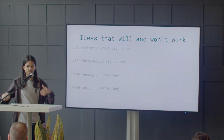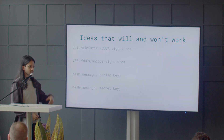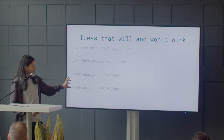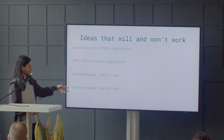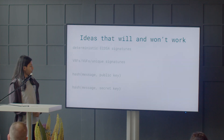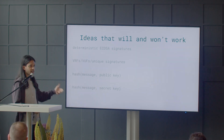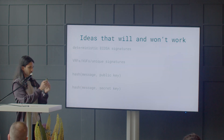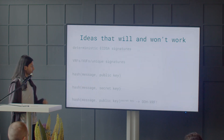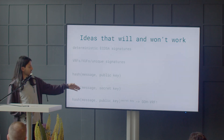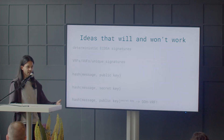Maybe instead of the public key we can use something like the secret key — this is still unique and deterministic — but again the issue is that you can't verify this without the secret key because you're calculating it inside of a hash. It turns out the final answer is we use the hash of the message to the power of the public key — hash of (message, public key) to the power of the secret key — kind of combining a lot of the previous ideas. In the literature this is called a DDH-VRF.